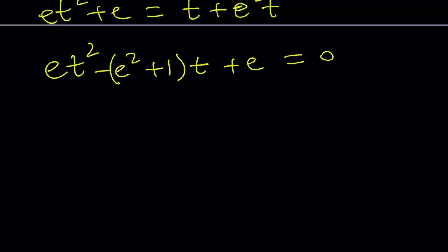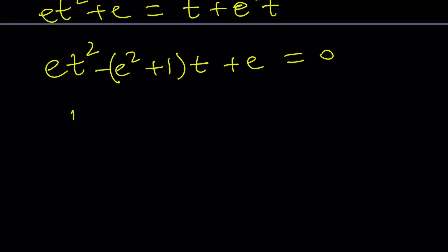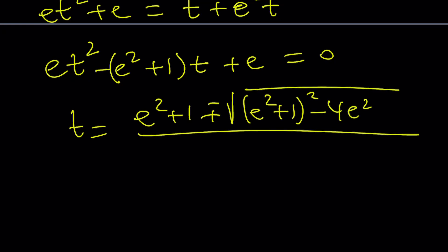And now, T is going to be negative B plus minus the square root of B squared minus 4AC, right? B squared minus 4AC. Yes. Divide by 2E. So, now these are going to be the T values.